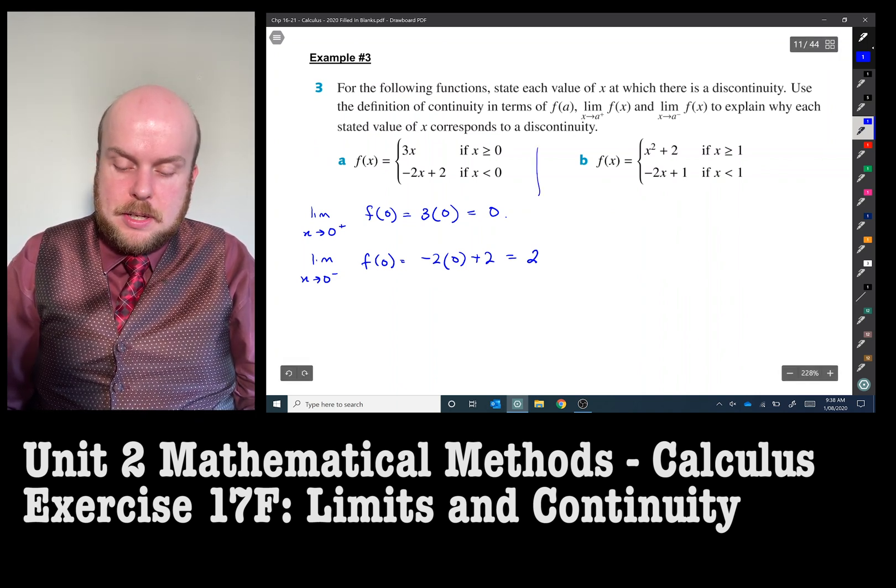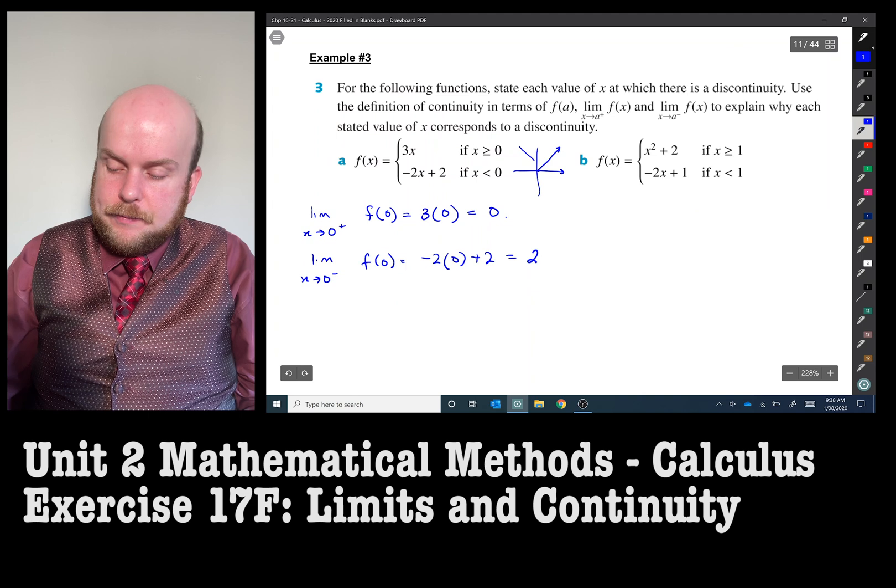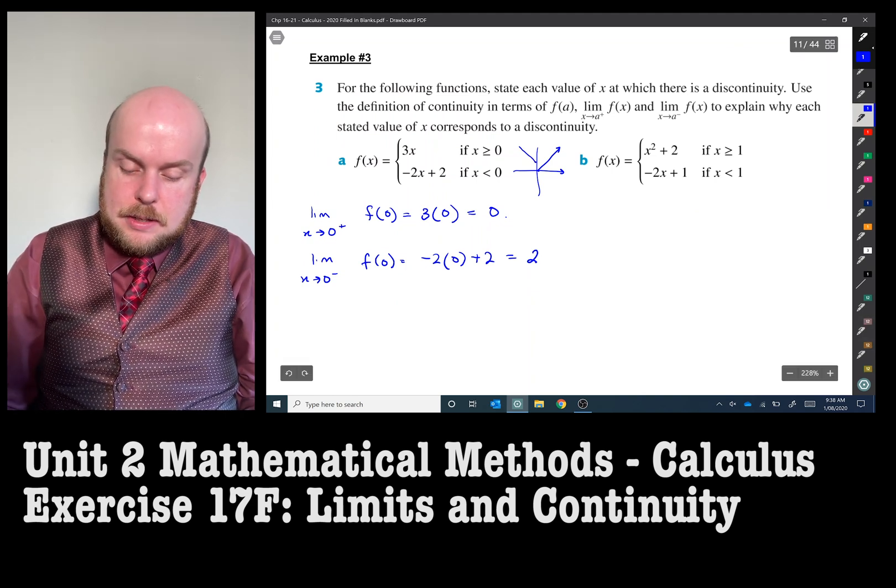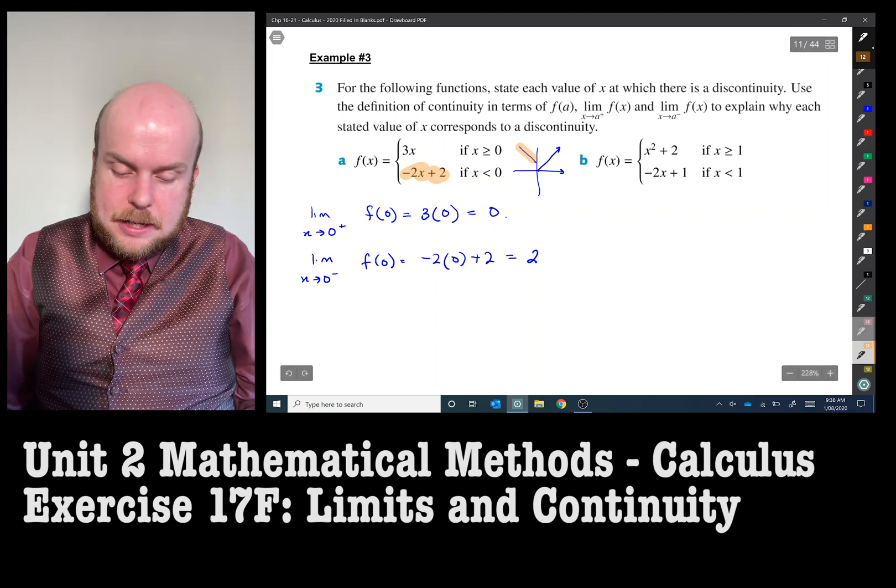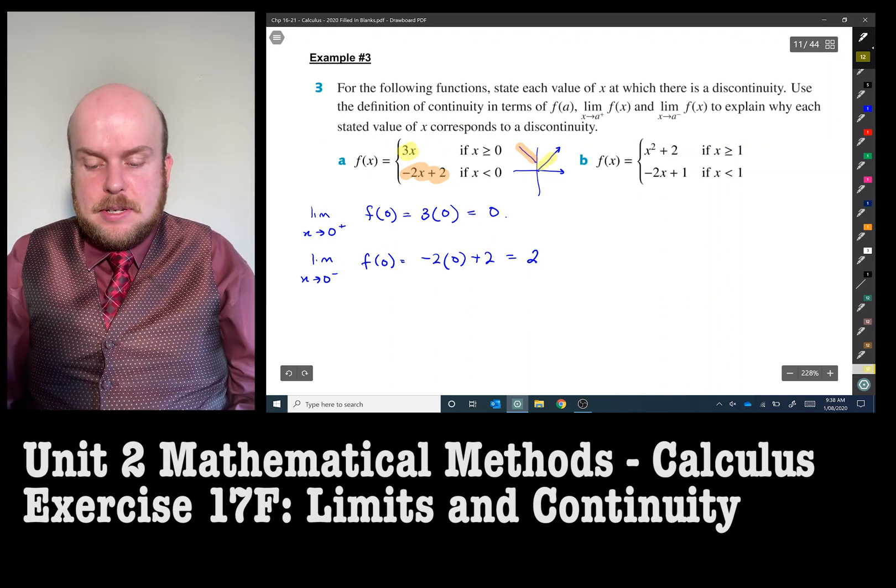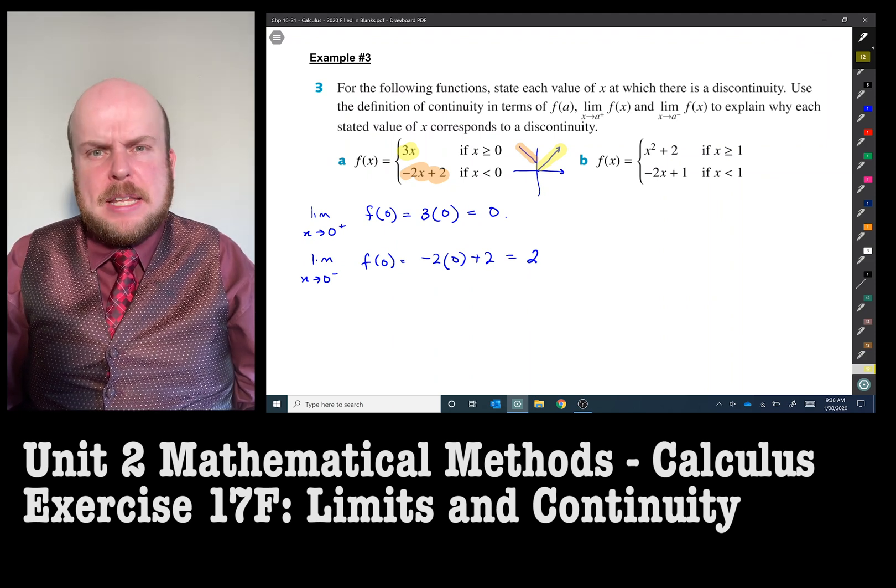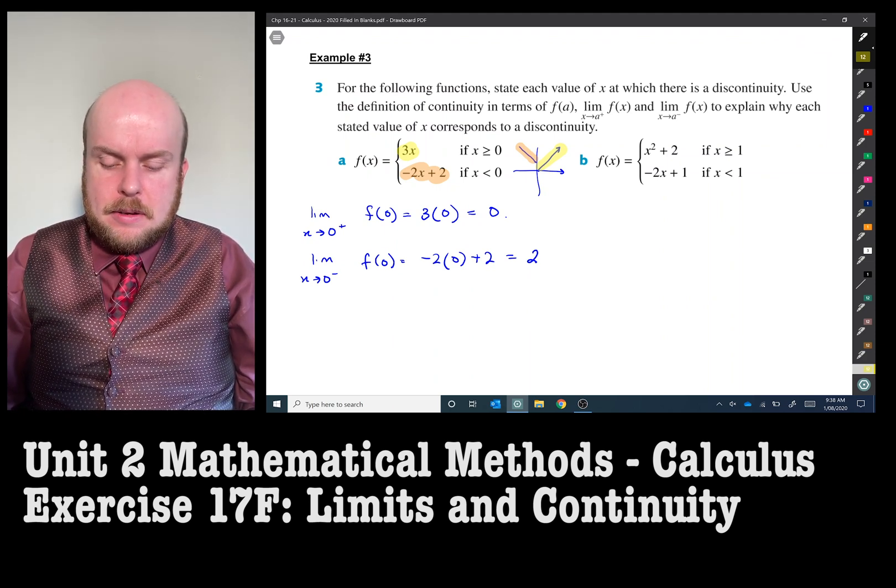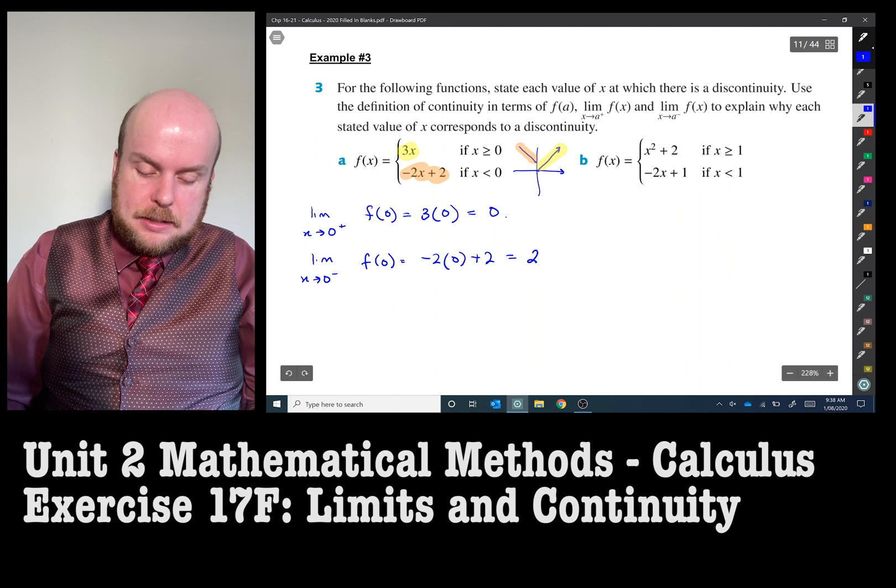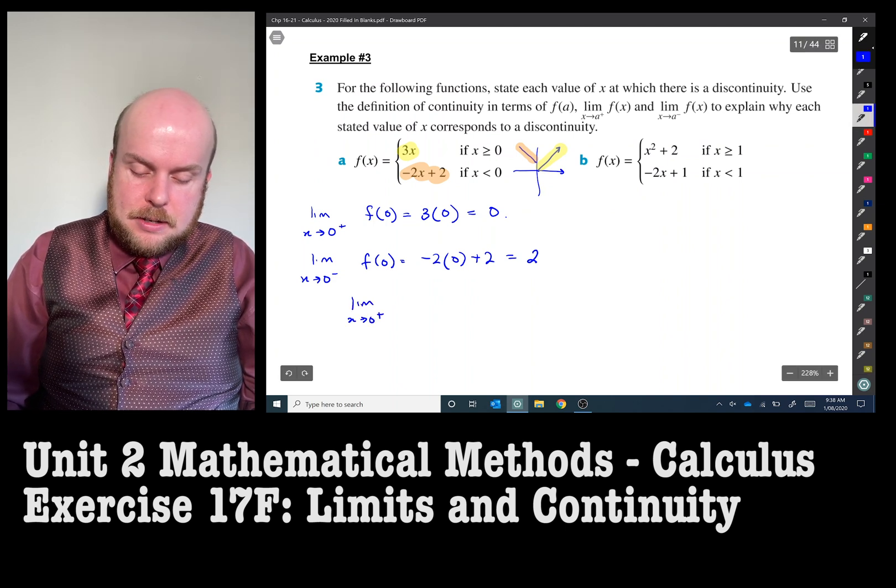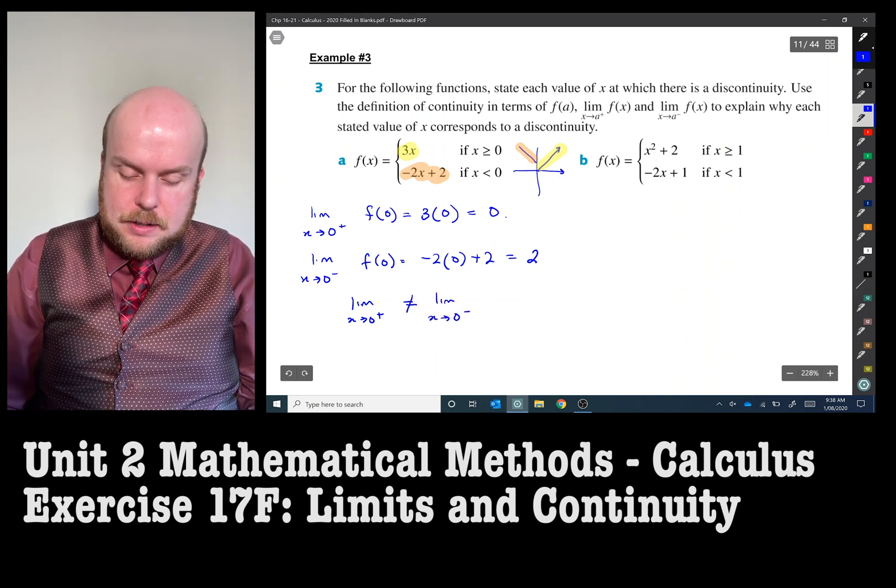So if I was to just draw a really rough picture, this is what the graph would look like. So the left one, this one here is going to be that one up there and then this one is going to be this little graph here. So there's the discontinuity. So as it's coming in from the left the value when x equals zero is going to be two, but when it's continuing on, if I'm coming in from the right on the yellow one it's going to be zero. So therefore I can say the limit as x approaches from the right is not equal to coming from the left, therefore not continuous.